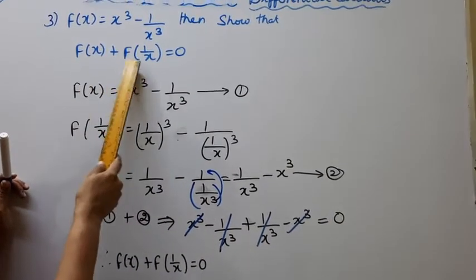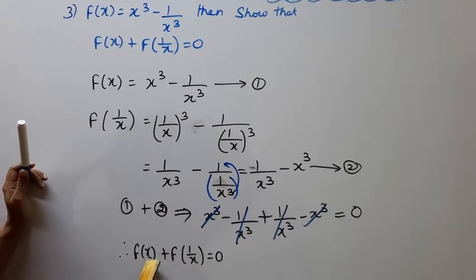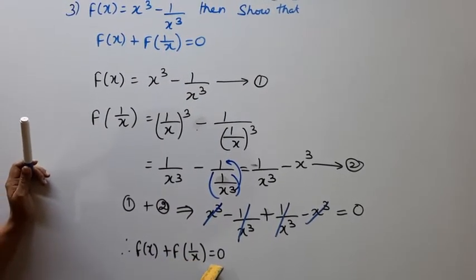Therefore f of x plus f of 1 by x equals 0.